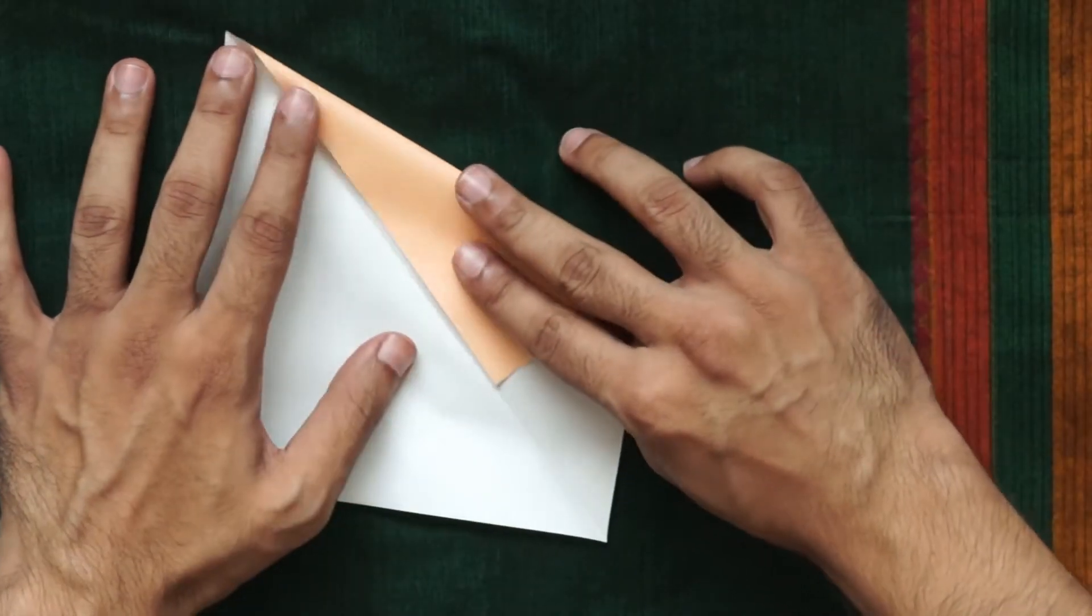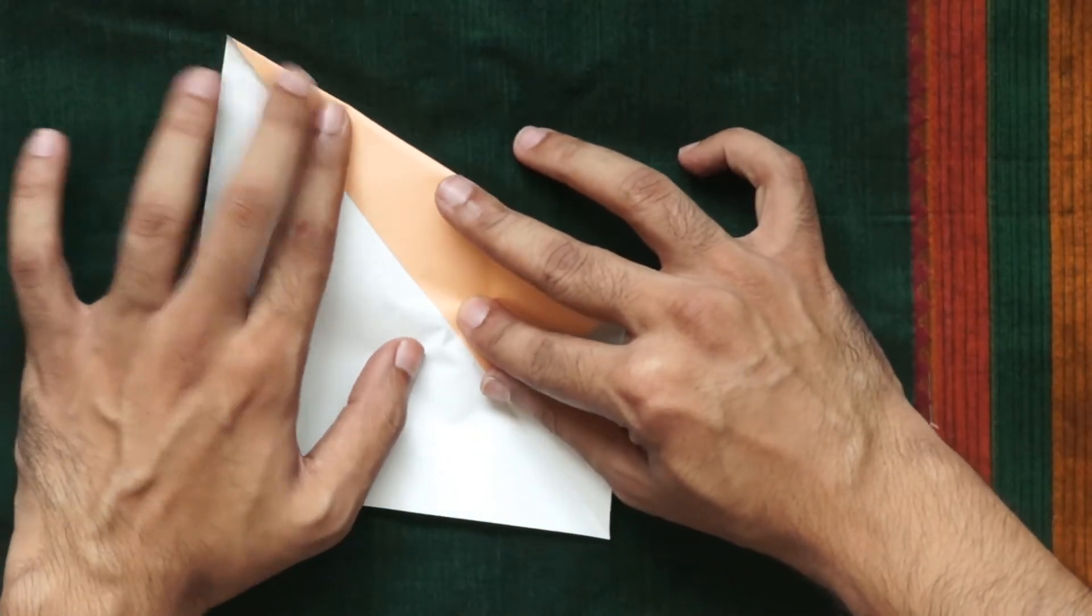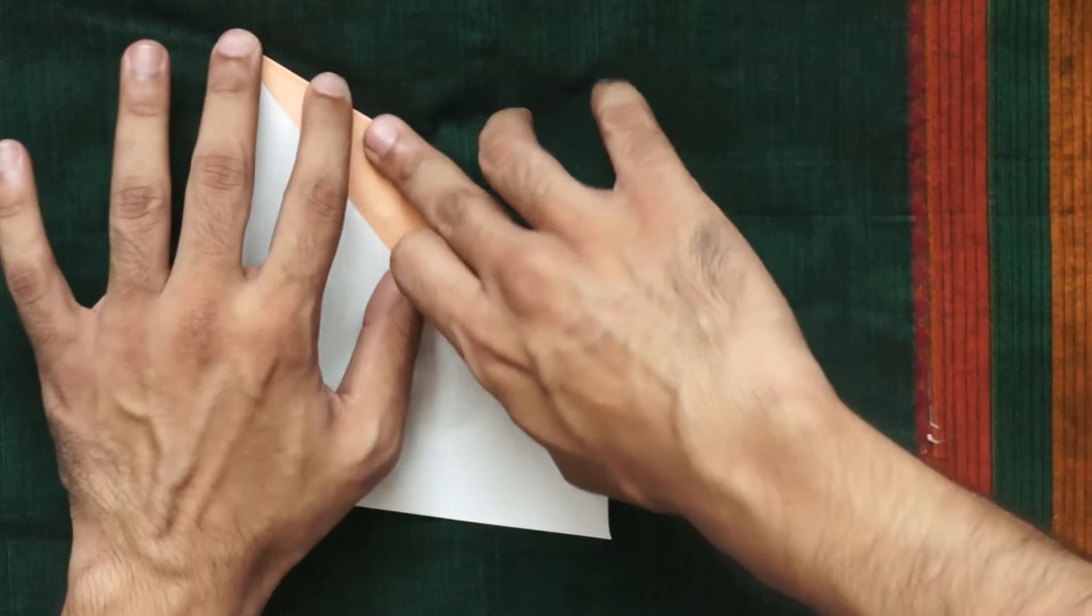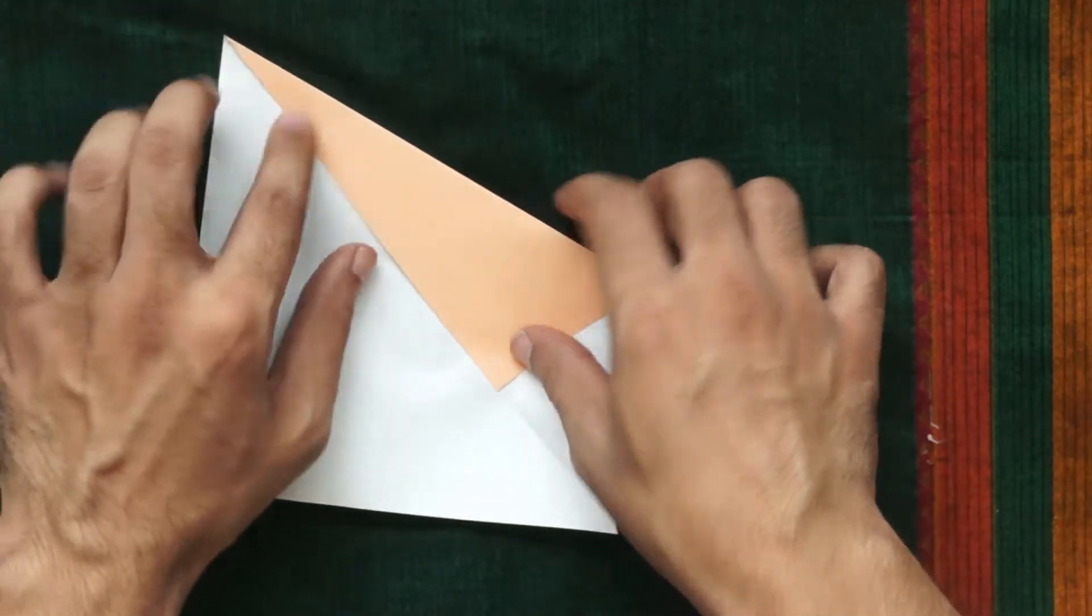Fold one of the top edges of the square towards the diagonal crease. Also, repeat on the opposite edge to make it symmetrical.